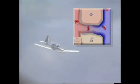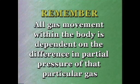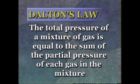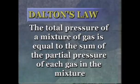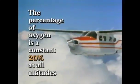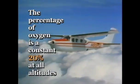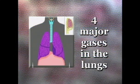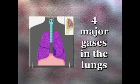As we ascend to altitude, let's follow the movement of oxygen and carbon dioxide in the body. An important point to remember: all gas movement within the body is dependent on the difference in partial pressure of that particular gas. Pressures are established and act in accordance with Dalton's Law, which states that the total pressure of a mixture of gases is equal to the sum of the partial pressures of each gas in the mixture. Keep in mind that when working with partial pressure, the percentage of oxygen is a constant 20% at all altitudes. As we breathe, there are four major gases in the lungs that exert constant pressure in the alveoli.